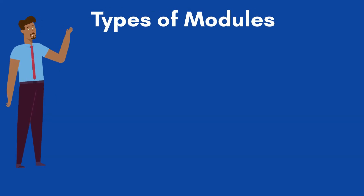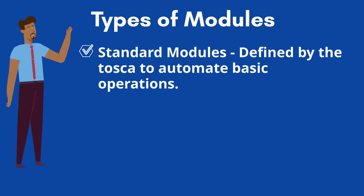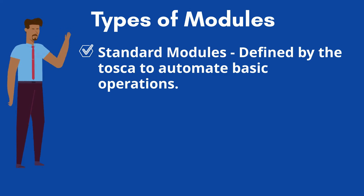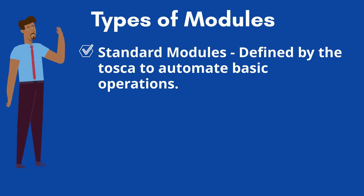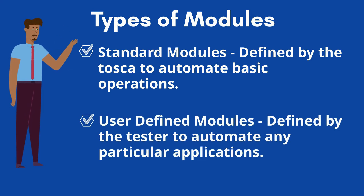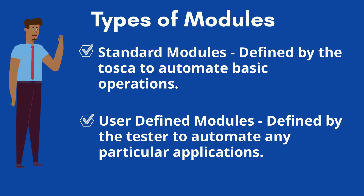Based on the usage, two types of modules are available in Tosca. Standard modules can be imported or loaded during workspace creation. Standard modules are defined by Tosca and are used to perform very common operations such as open file, invoke application, string operations, buffer operations, verifications, etc. User-defined modules are defined by the tester during test case automation. These modules are developed by scanning the applications. Each module represents a logical functional block.